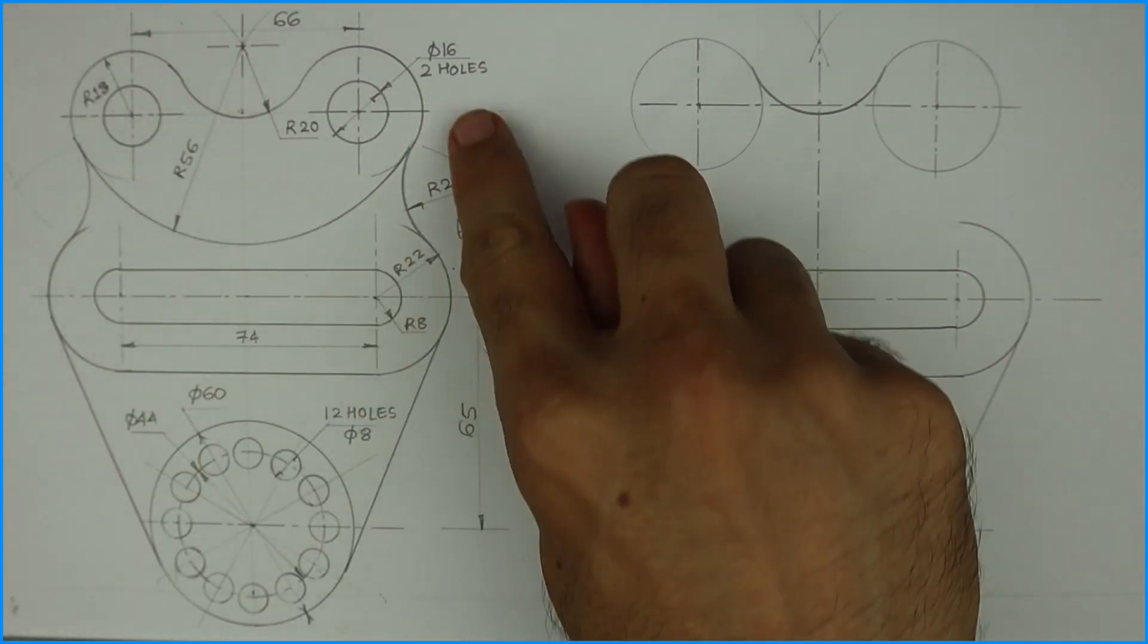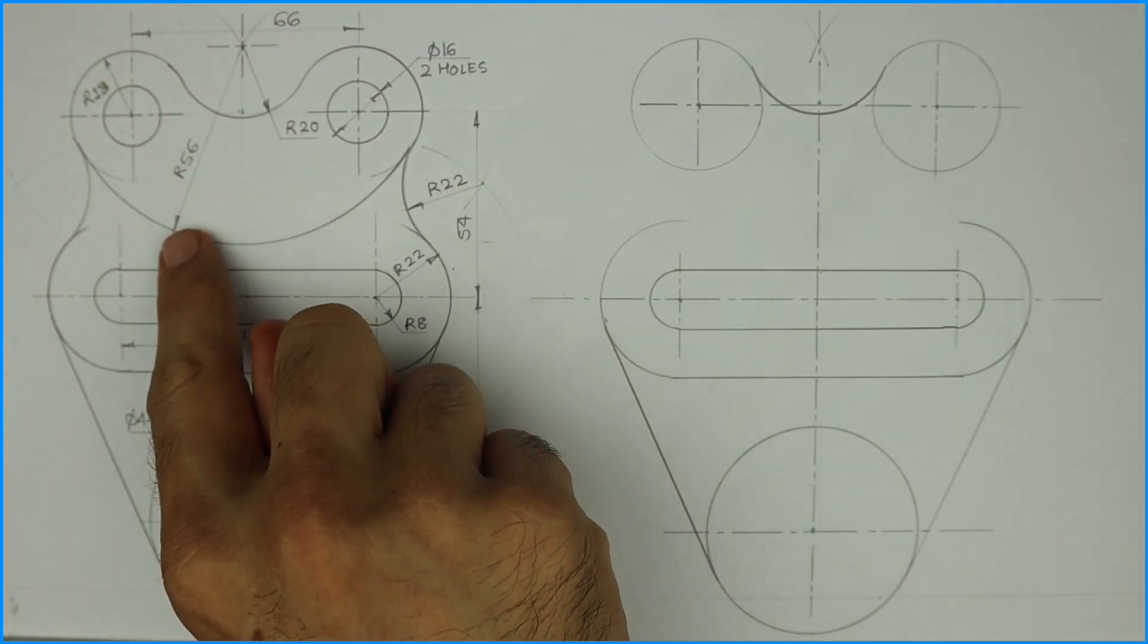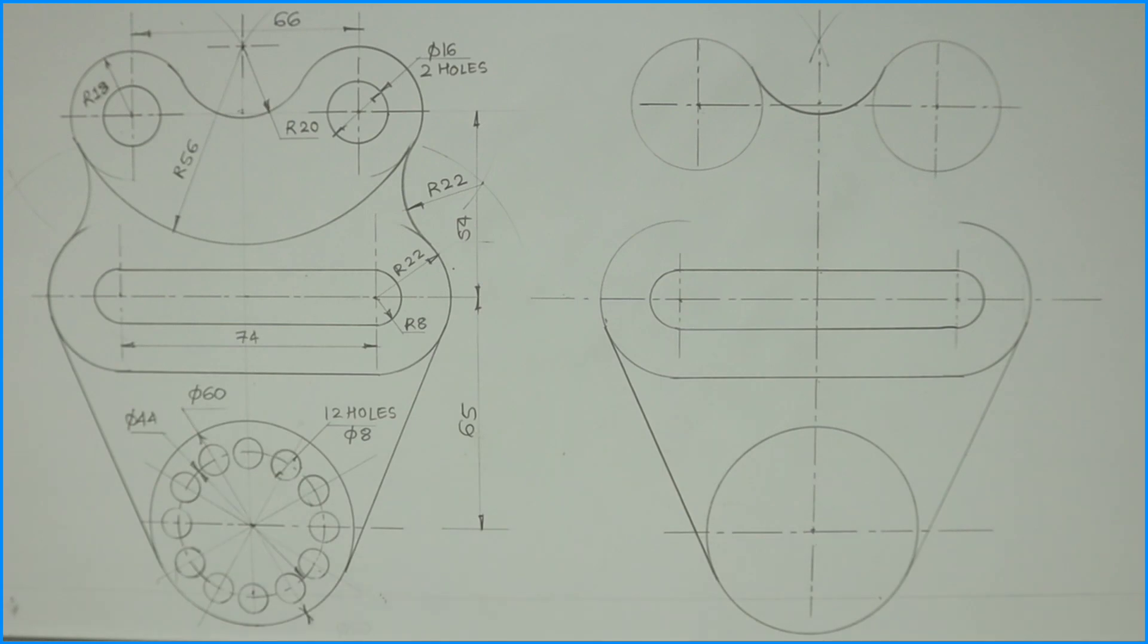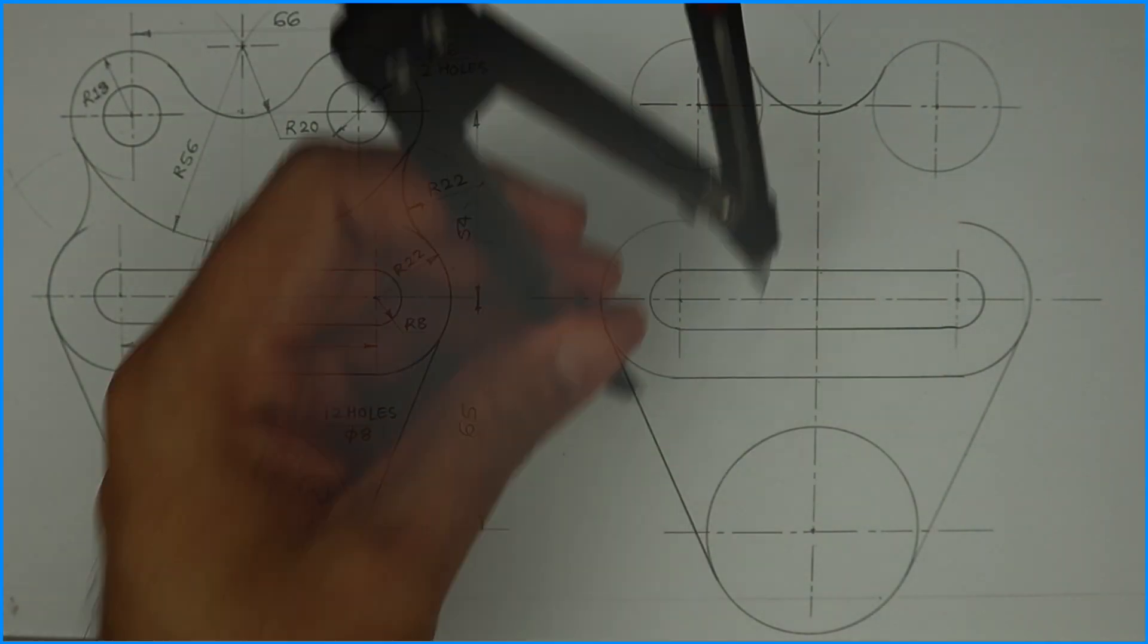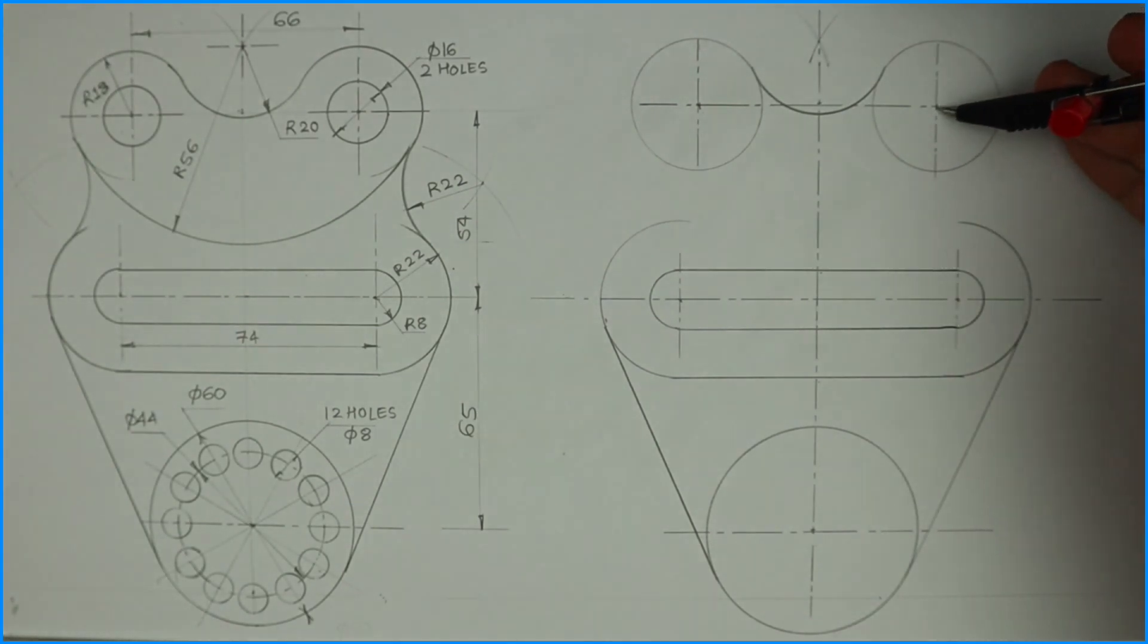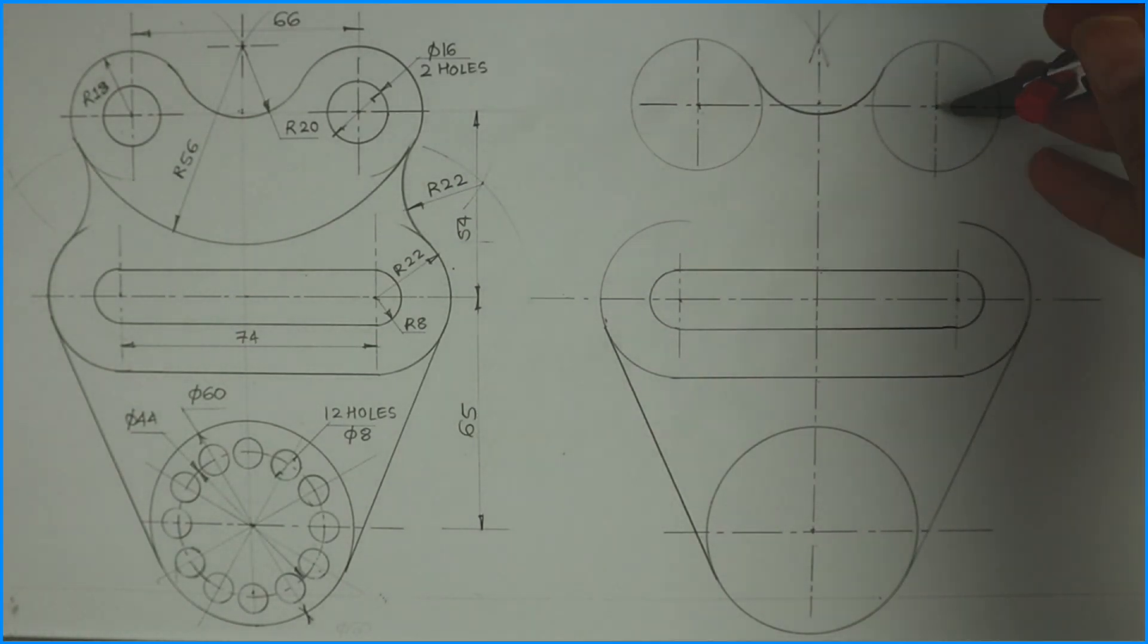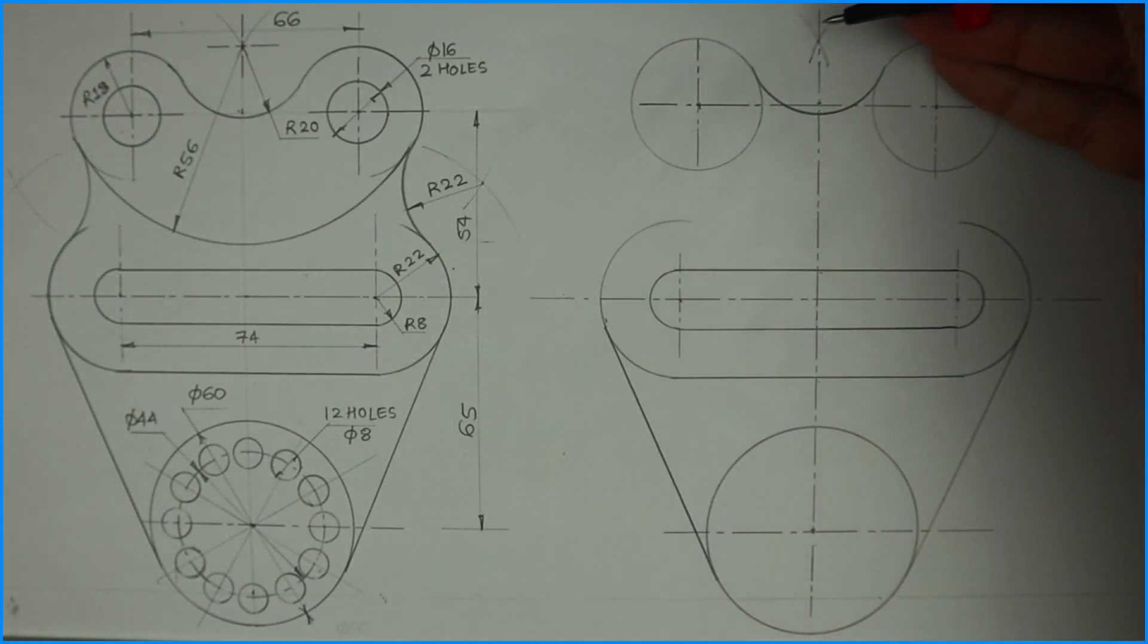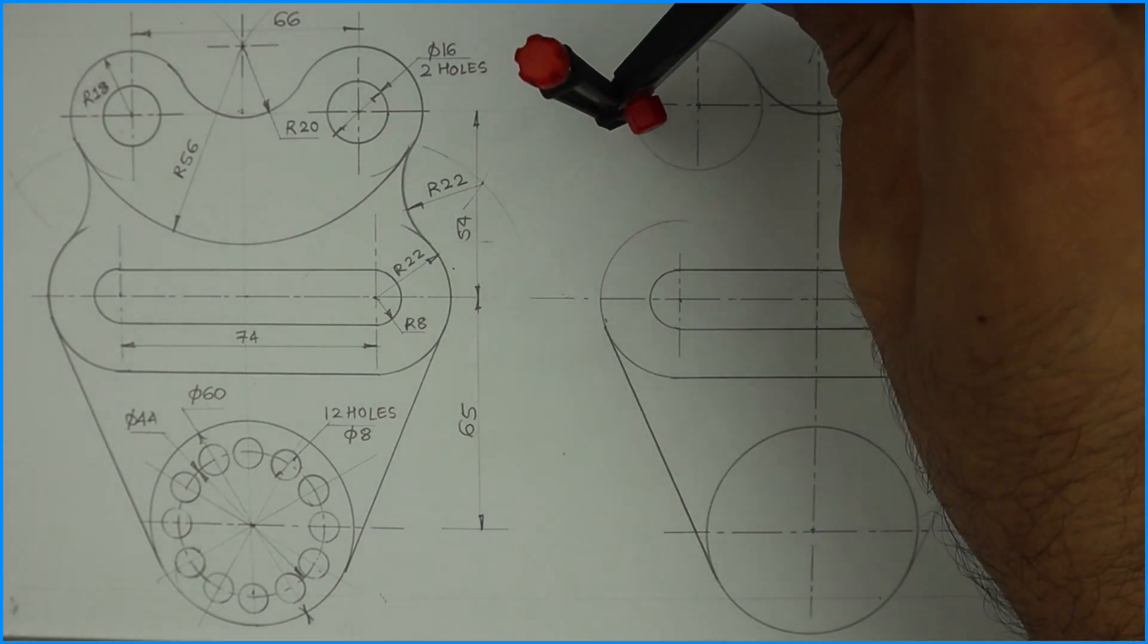Then 56, it is internal, so 56 minus 18. From this point, from the center, 56 minus 18 is 38. And from that point you cut 56.